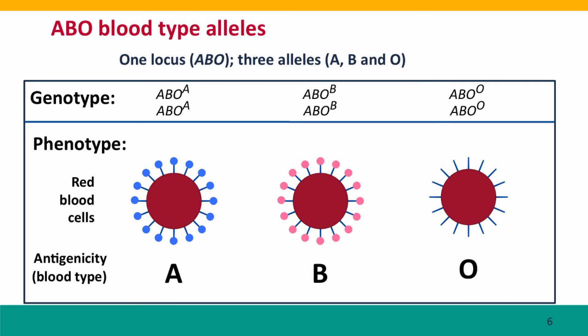Now I want to move on to think about one somewhat more complex situation — the alleles that control the common ABO blood types. Whenever you get a blood transfusion or you're a donor at a blood bank, your blood type is always checked. The phenotypes are determined by measuring what kind of antibodies your blood reacts to, and those antibodies are detecting the presence of specific sugars on the red blood cells. People who are homozygous for the A allele have A-type sugars; people homozygous for the B allele have B-type sugars; people homozygous for the O allele have no sugars on the red blood cells.